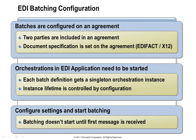Batches are configured on a particular agreement, which combines both the sender and receiver and the interactions they define. The document specification is already on the agreement about what kind of EDI document we're sending out and the batch configuration. When you define a batch configuration, BizTalk provides a common core orchestration for EDI batching. When we create a batch configuration, a single instance of that orchestration gets created and tied to that batch configuration. When the first message matching our configuration comes in, it goes to that orchestration, gets processed and held as a reference until our conditions are met for when that message should be released.